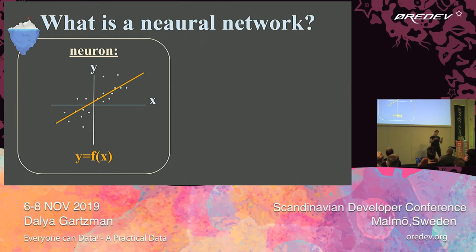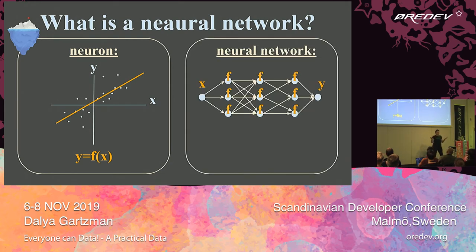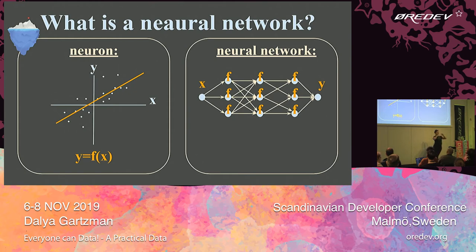So a neuron is a function. A neural network is a network of functions — that's it. You have lots of functions, lots of neurons, that feed each other. Some function's output is another function's input. We have inputs X and outputs Y, and we build a neural network that we show many examples of input and output. Then the next time we have a new input the neural network has never seen before, it's going to give us an output that we hope will be kind of true.